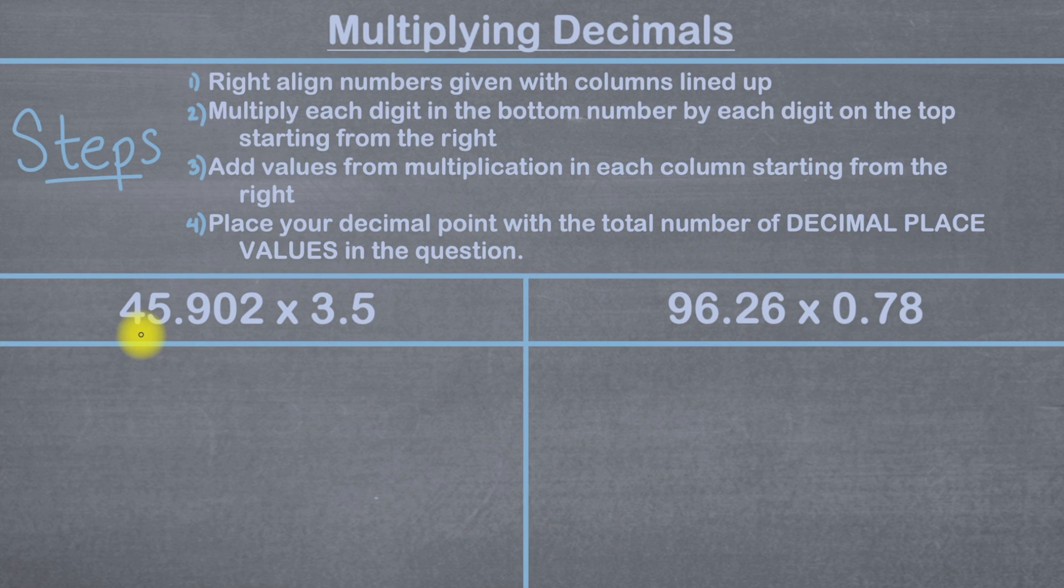So this example says 45.902 times 3.5. Step one says to right align numbers given with columns lined up. All that means is we're going to put one of these numbers on top of the other and make sure we right align them when we do so. And what I recommend is when you have two numbers like they have here, you should make sure that you put the number with less digits on the bottom.